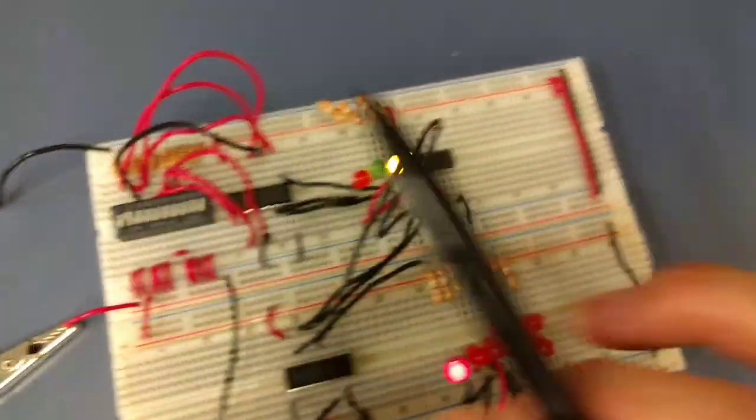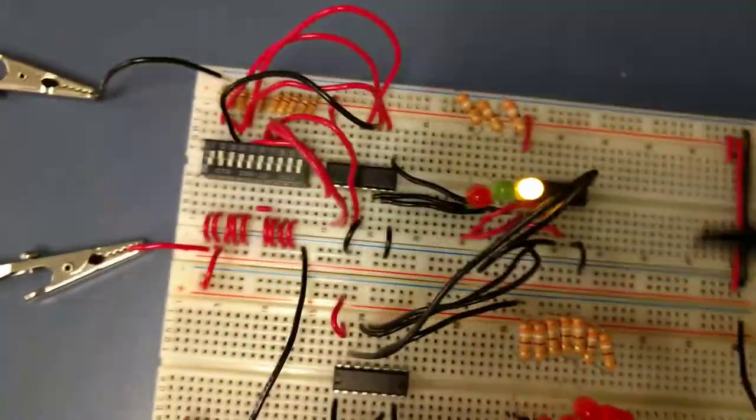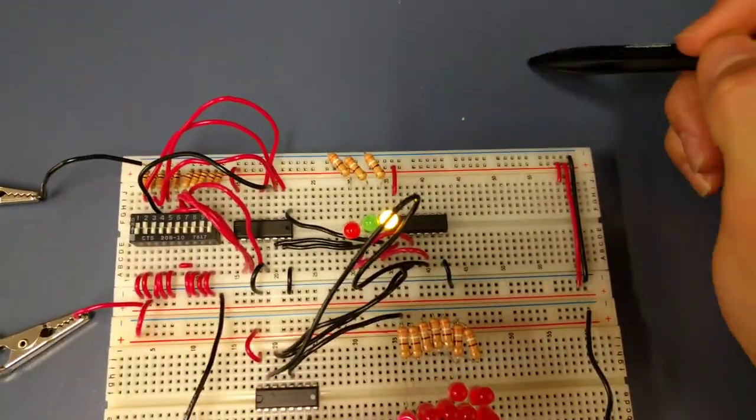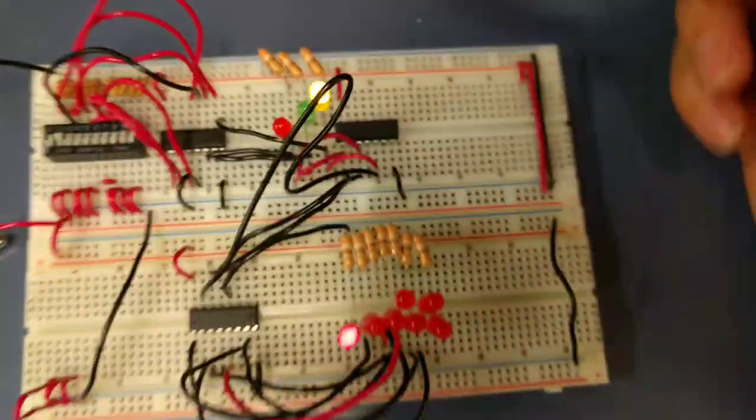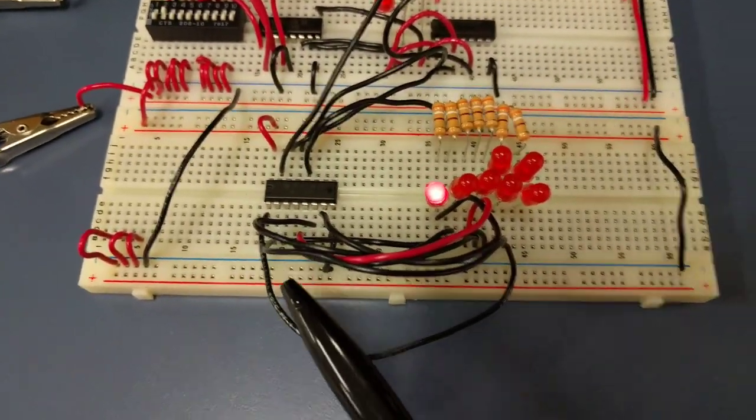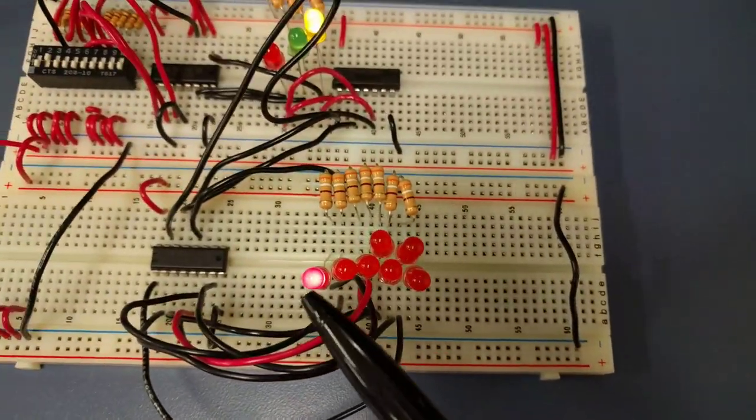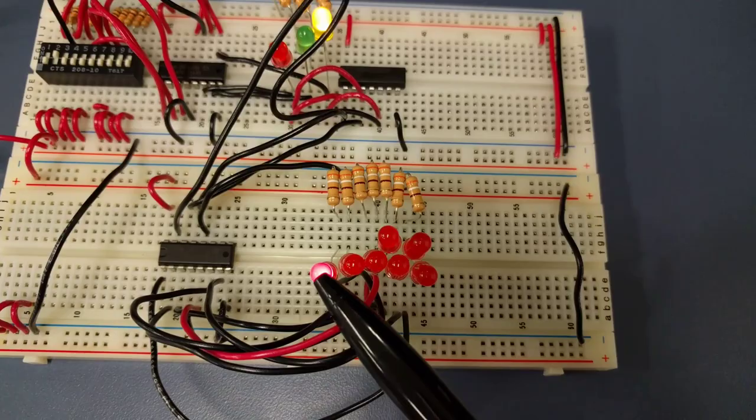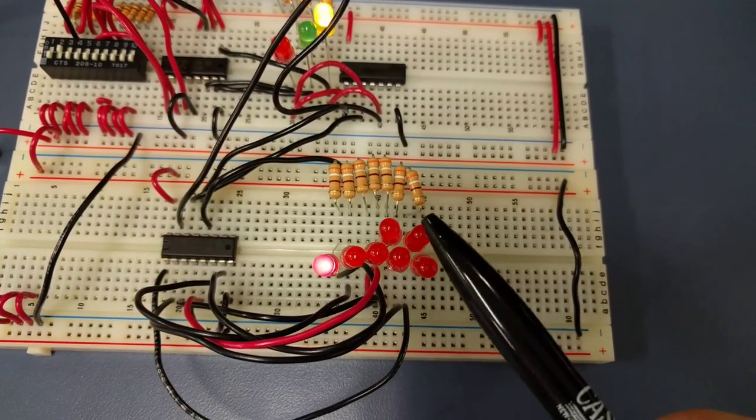If I turn this on, in binary that 1 would be 001. The decoder makes it so that this thing lights up because it goes from 1, 2, 3, 4, 5, 6, 7.